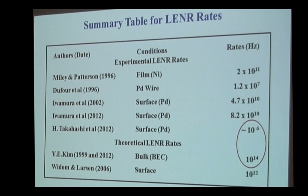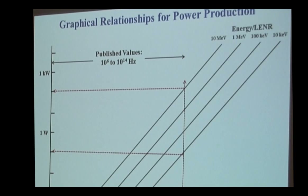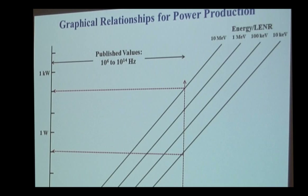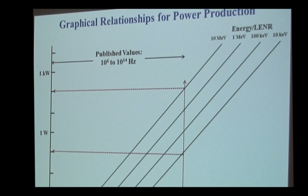Now we're going to use these reaction rates. I'll start with two log-log graphs that allow you to look at the overall picture. This one is for power production: reaction rates on the horizontal axis, output power on the vertical. I cut the power axis off at a milliwatt because that's near what's measurable. Taking a relatively high experimental rate of 10 to the 14th, depending on the energy per reaction you can get a wide variety of powers — this speaks to the difficulty of inferring reaction rates from measured power output.